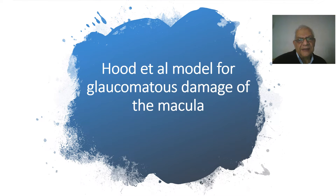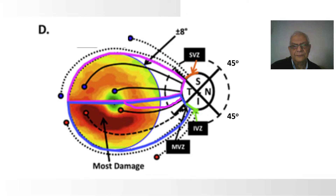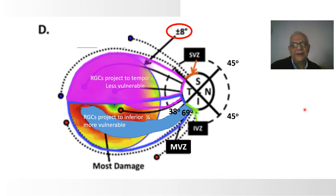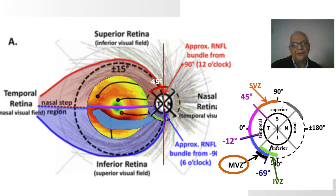I want to show you some details about this model proposed by Hood and his group. They found this part to be commonly affected and suggested that the retinal ganglion cells project their fibers into this inferior quadrant — that's why it is crowded and affected more. They term this part the macula vulnerable zone. The remaining part of the ganglion cells, in this uncrowded part of the disc,